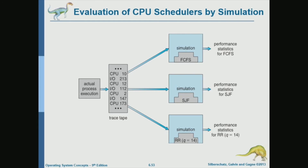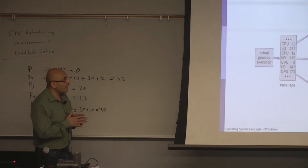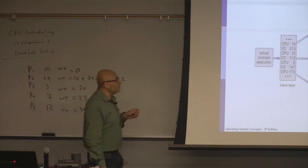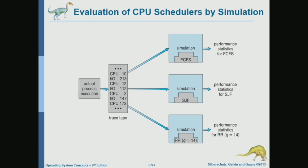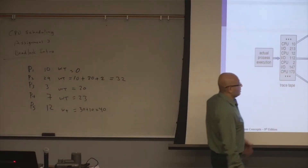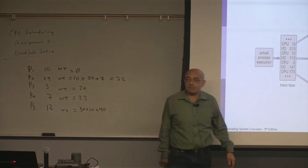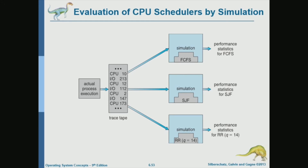You can do simulation offline by tracing processes in a real system, generating trace files, and feeding them into programs that simulate scheduling algorithms. These simulators abstract process behavior into CPU bursts and IO requests. You simulate multiple algorithms, generate performance statistics, evaluate them, and select one based on the simulation results.